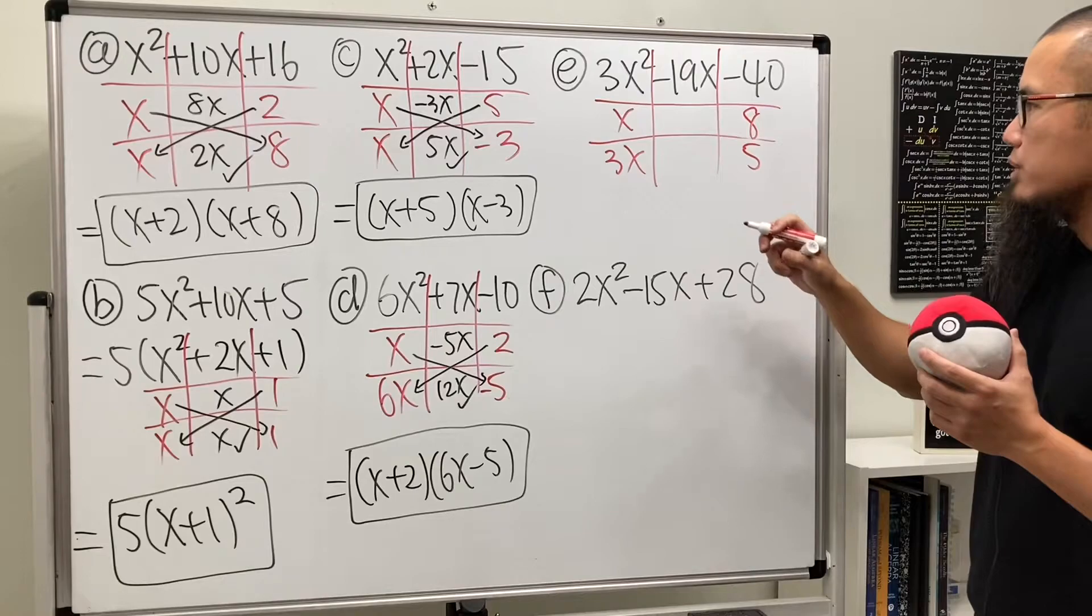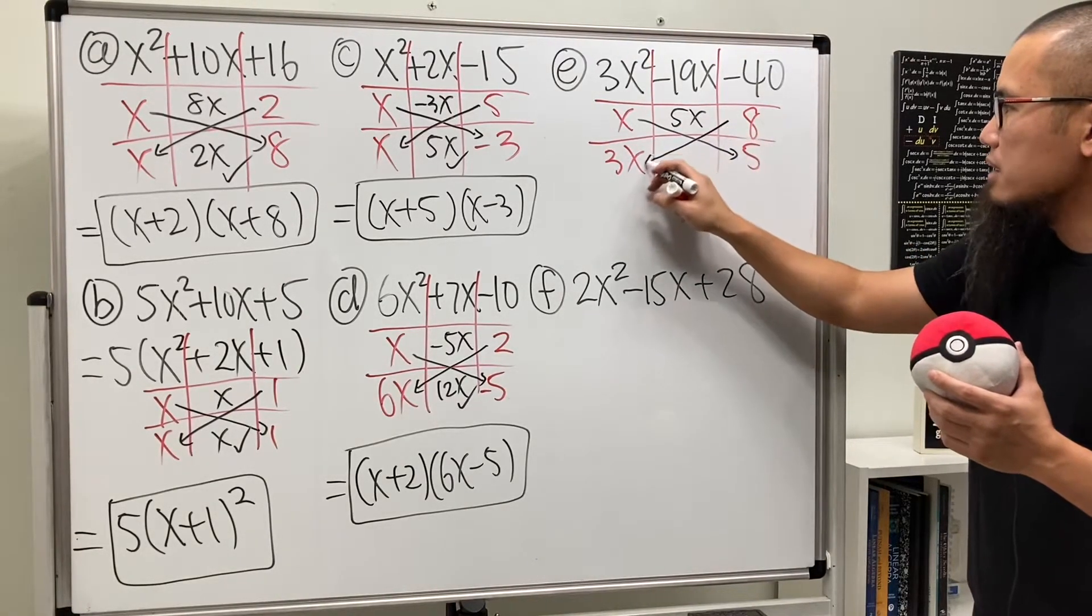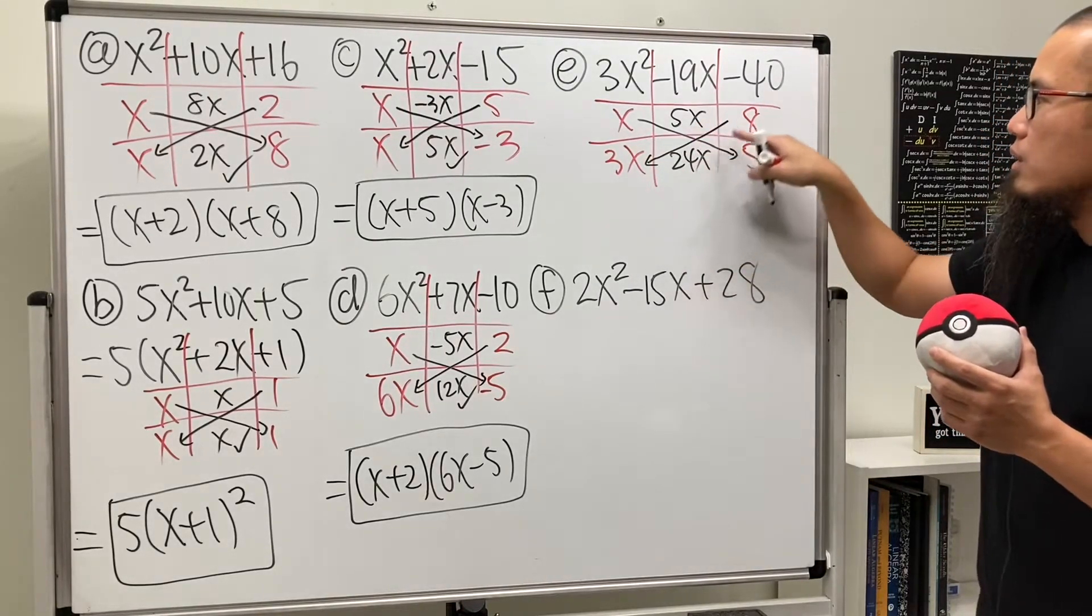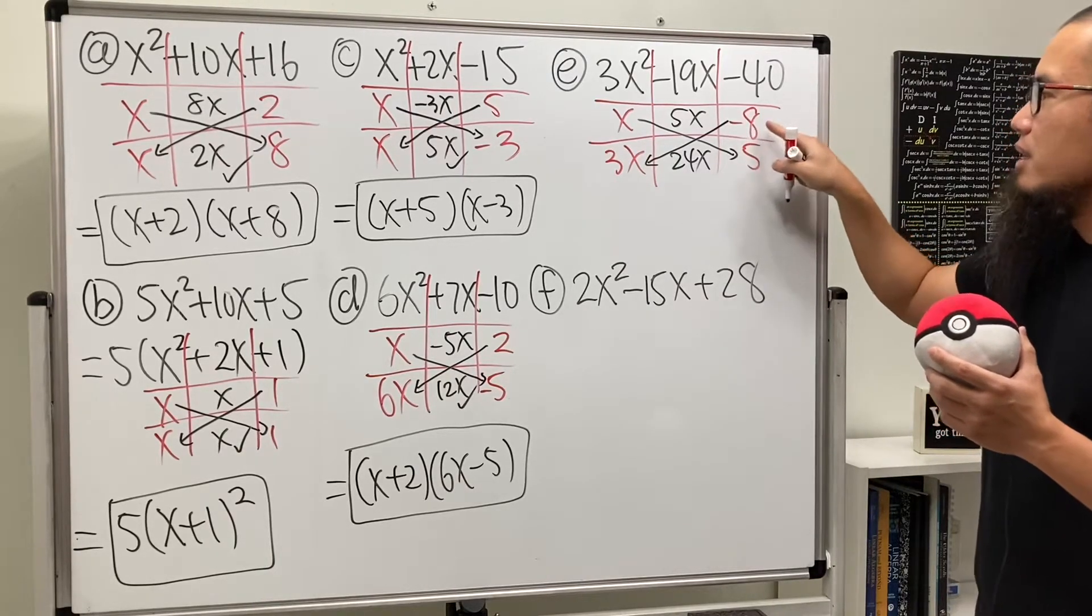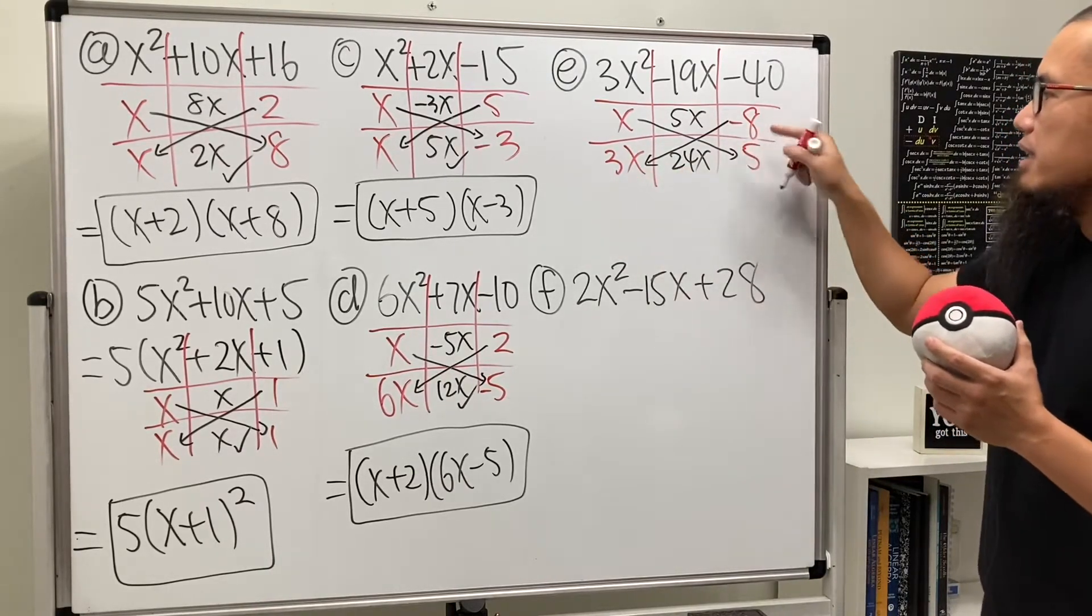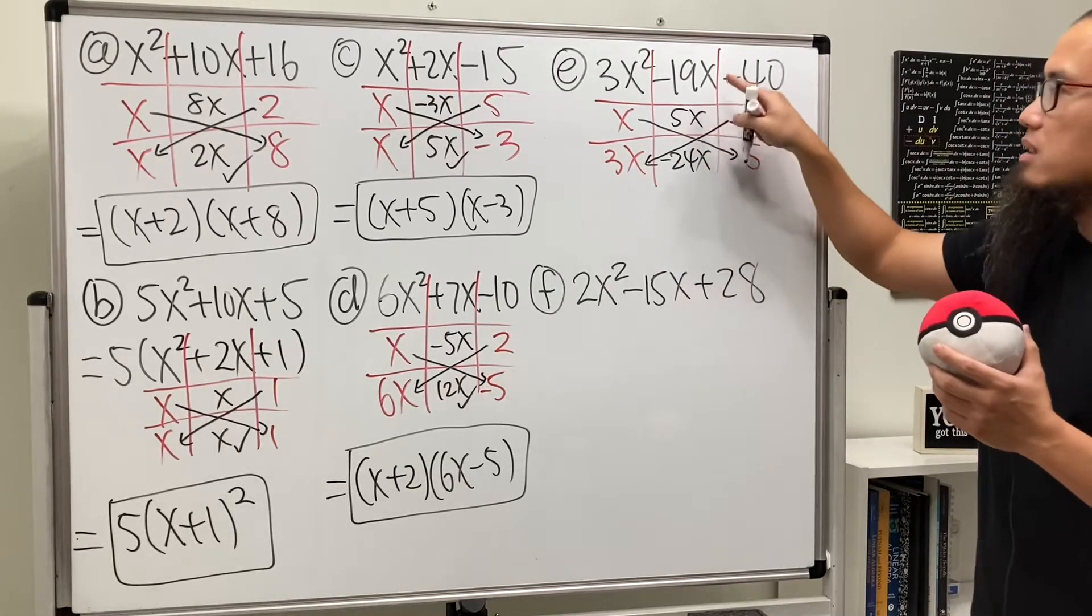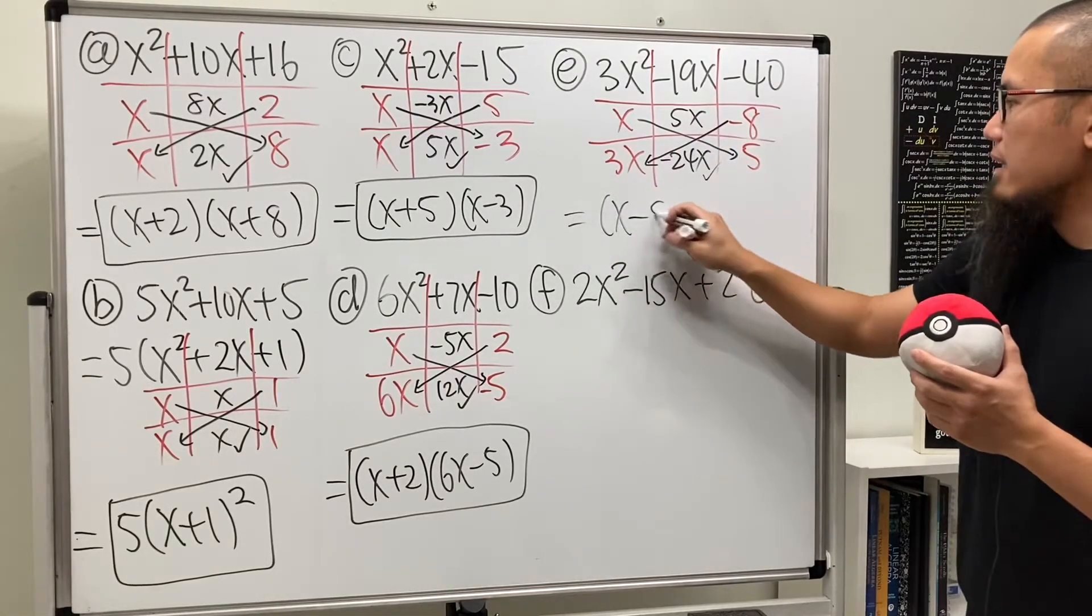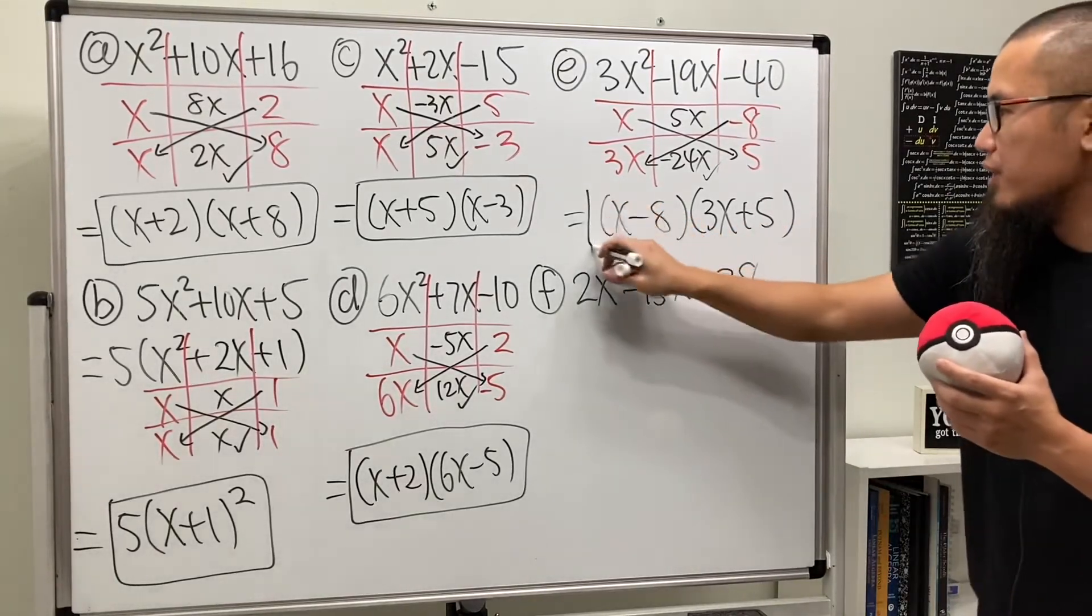Maybe let me just reverse the order. Let's put down 8 and 5. And you see, this times this will give us 5x. This times this will give us 24x. Well, which one should be negative now? This one. Because this way, 3x times negative 8 will give us negative 24. Together we'll give us negative 19x. So the answer is x minus 8 times 3x plus 5. Good.